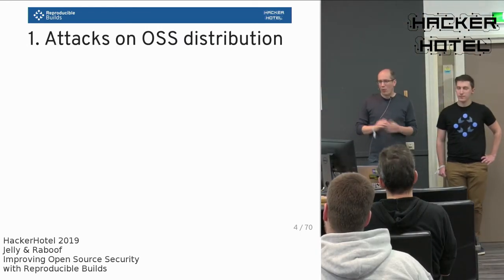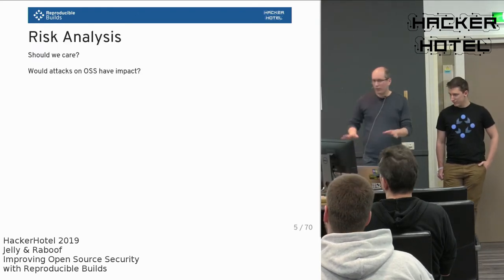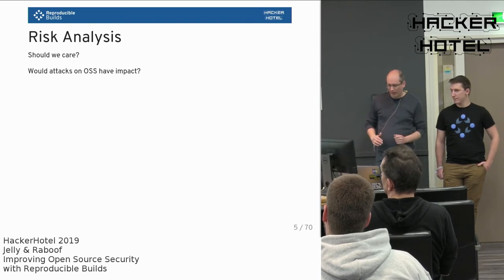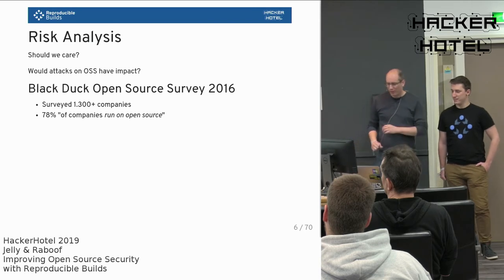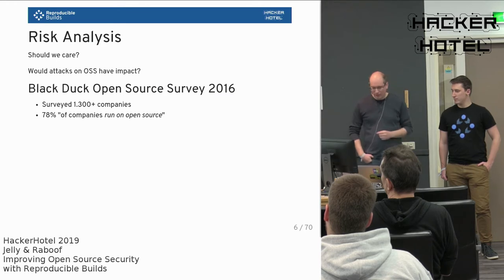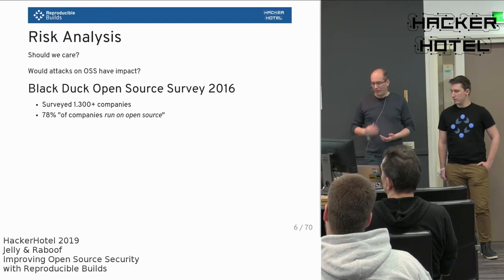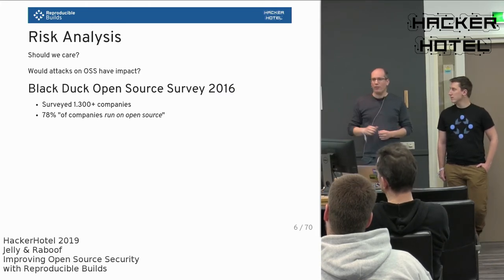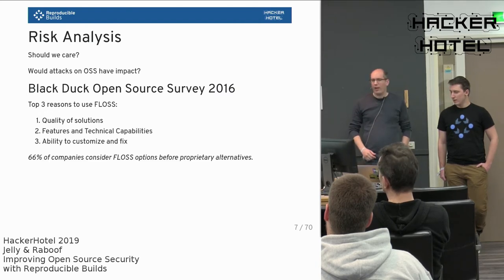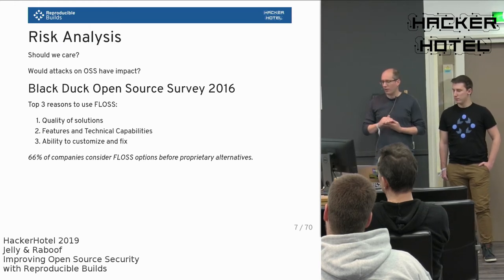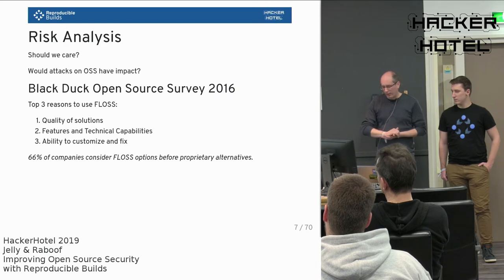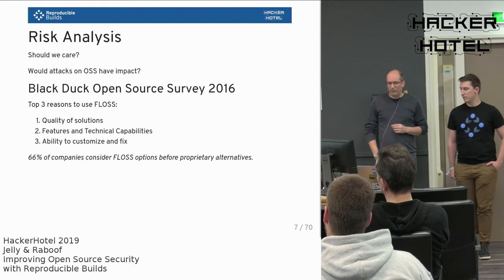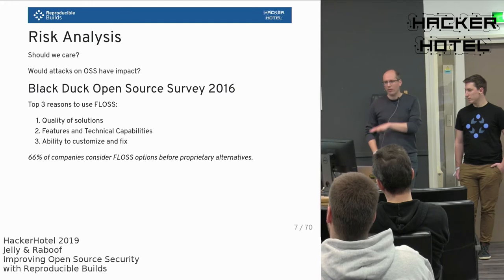Let's start with why this is important. As a lightweight risk analysis: are attacks on open source software relevant? We of course think so. Black Duck did a survey — unfortunately they stopped in 2016 — but most companies surveyed say they run on open source software. The reasons cited include quality, features, technical capabilities, and the possibility to customize and fix — no longer just cost. Well over half of companies would consider free and open source options before looking at proprietary alternatives.